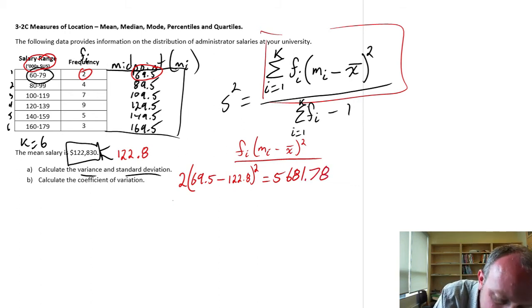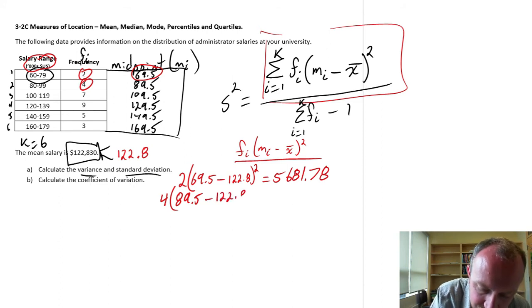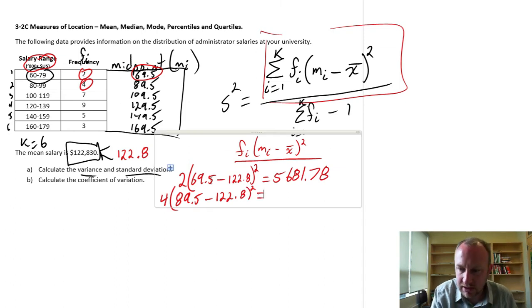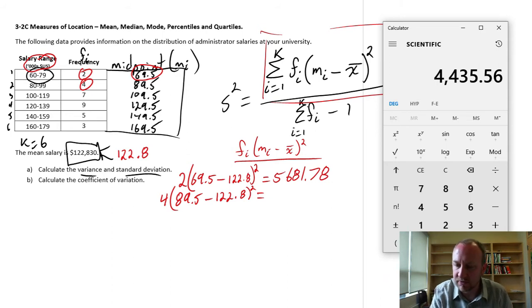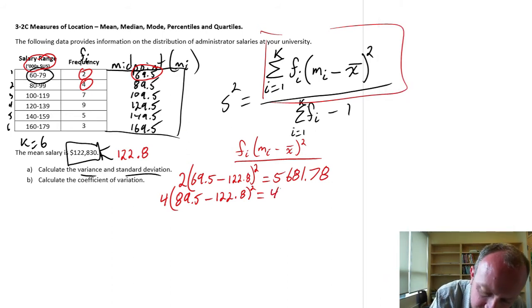Now the next one is going to be 4, so this is a 4, times the next midpoint, 89.5, minus that mean that never changes, 122.8 squared. Okay, so 89.5 minus 122.8 equals, square that, times that by 4. 4435.56. So now I have to do that four more times. I've done the first two classes in this frequency distribution.